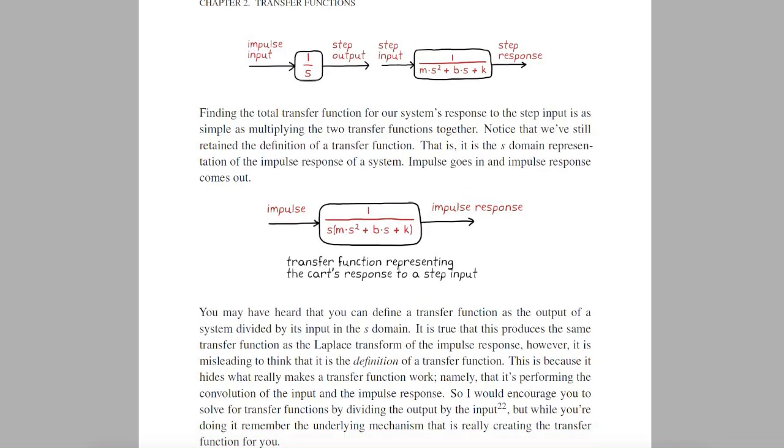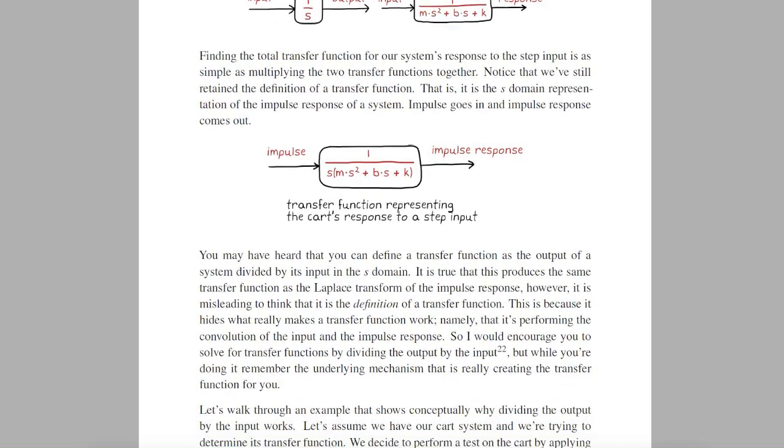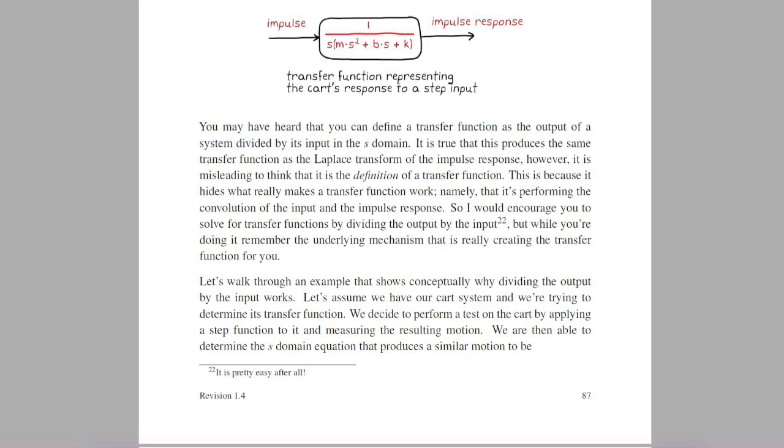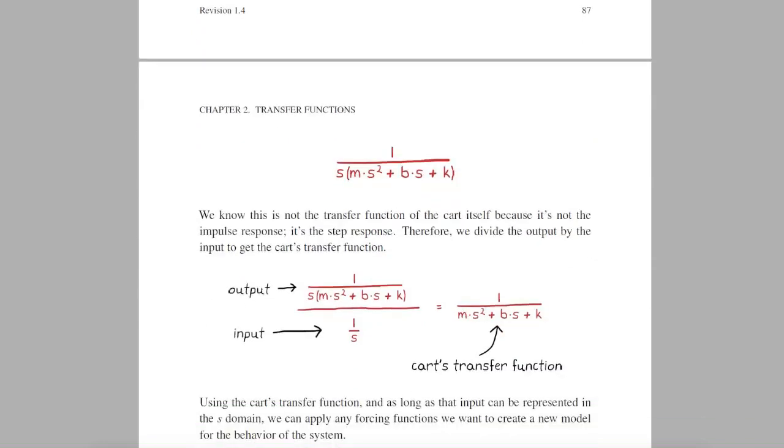If you've been exposed to transfer functions before, you might have heard that a transfer function is the output divided by the input of a system, and yet I keep saying that it's the impulse response of a system in the S domain. Well they both produce the same transfer function, so you can use either method to solve for it. But taking the output and dividing by the input says nothing of the underlying mechanism that makes transfer functions work.